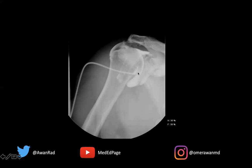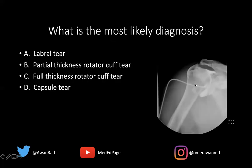The fact that we've done an arthrogram and contrast has extravasated into the subacromial subdeltoid bursa means that there is a full thickness rotator cuff tear. The only way contrast can get from the glenohumeral joint into the subacromial subdeltoid bursa is if it traverses the entire thickness of the tendon. A partial thickness tear would only have contrast going into the substance of the tendon.